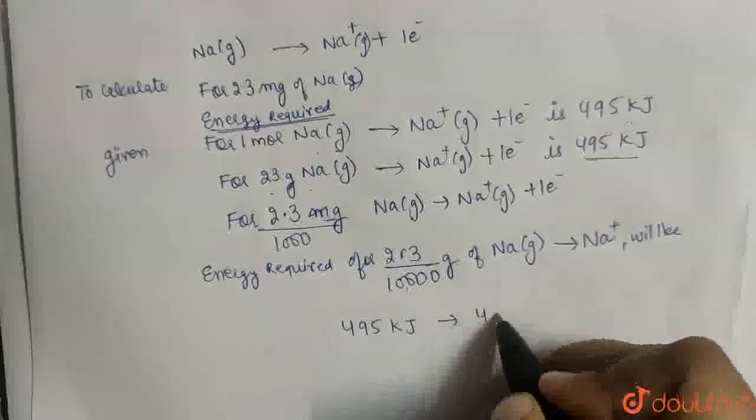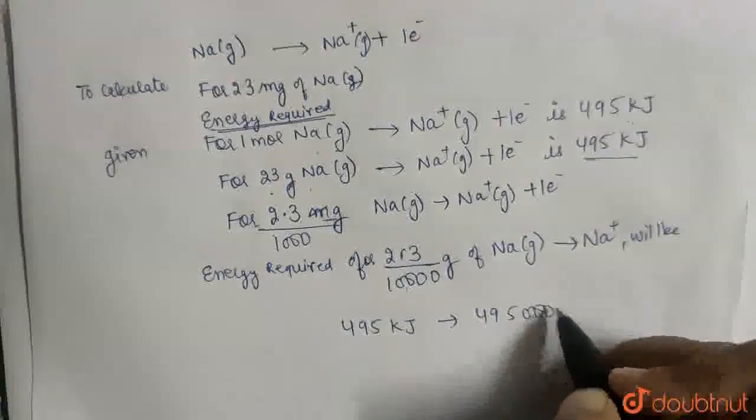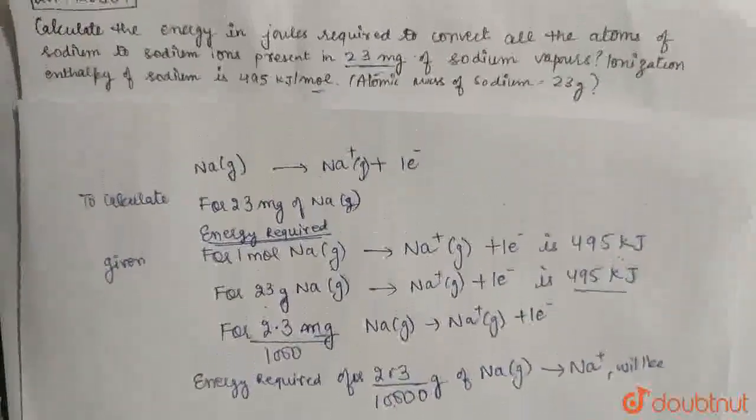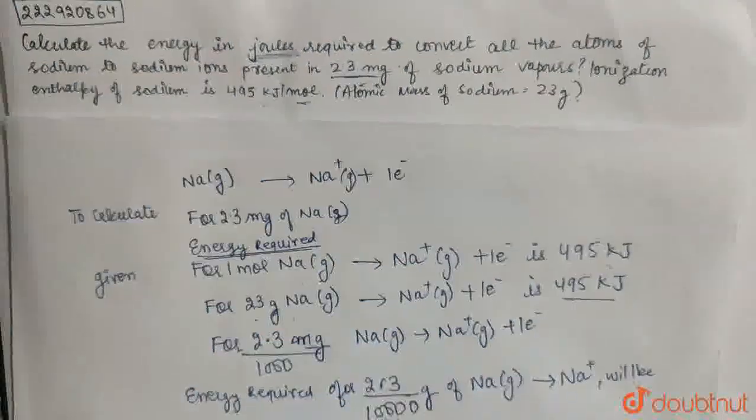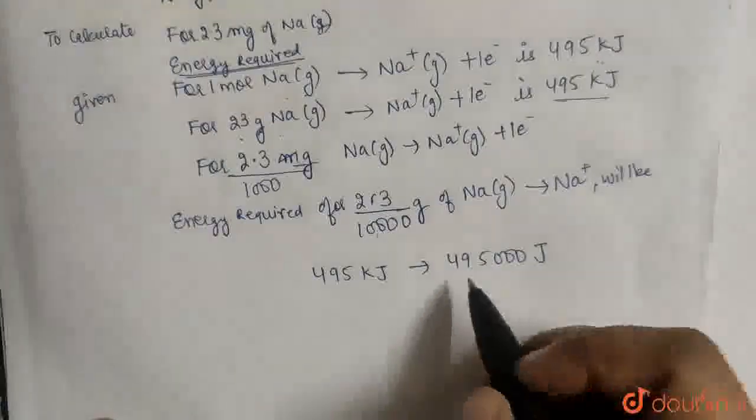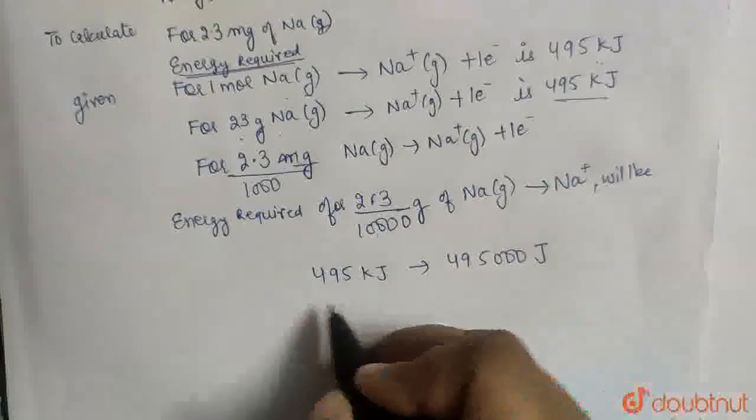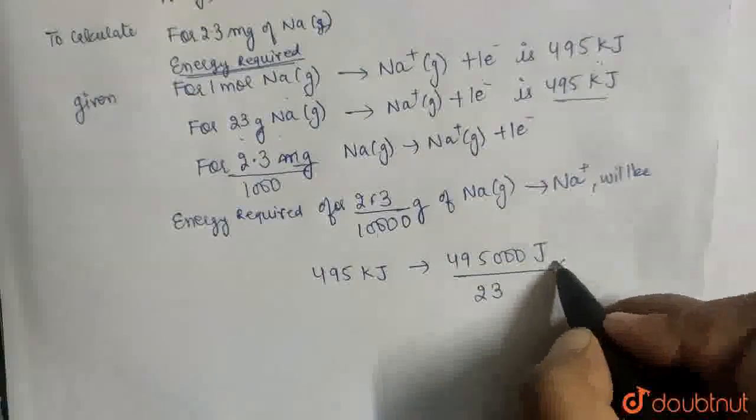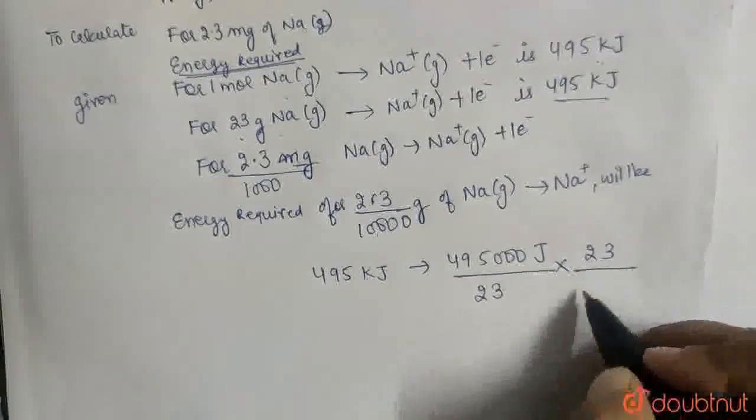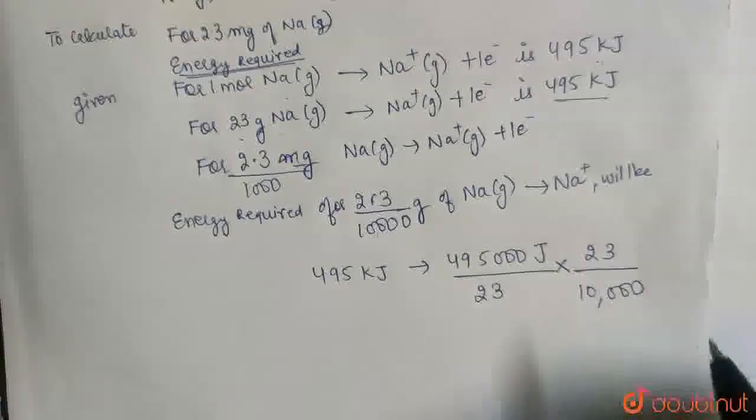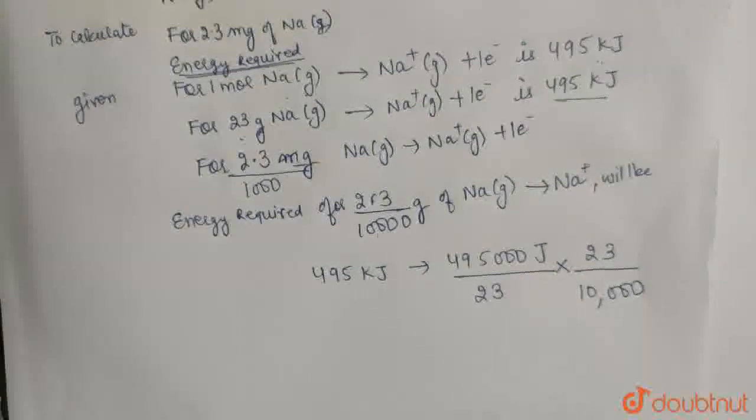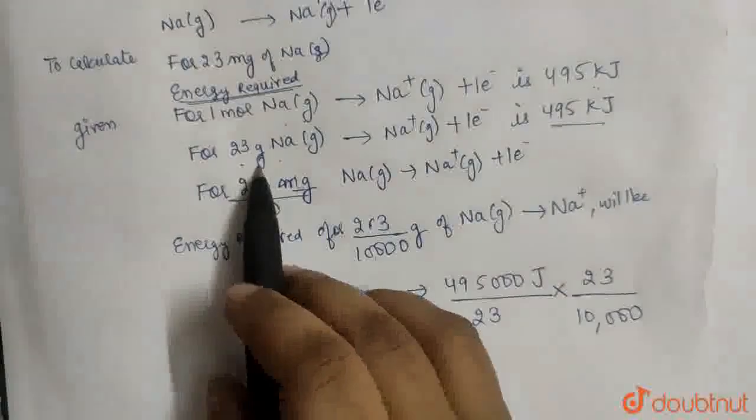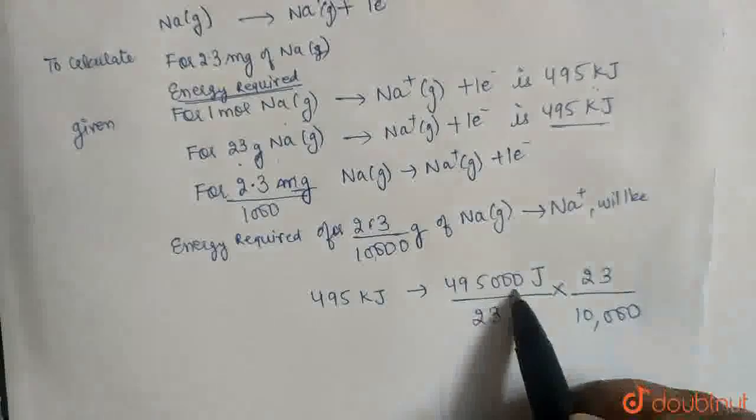How much will it be? For 23 grams it's 495 kilojoules. We can write this as 495,000 joules. Okay, to calculate energy in joules. We haven't done anything complicated. Simple: for 23 grams it's 495,000 joules.